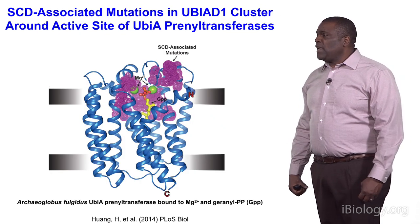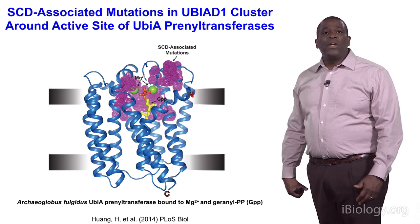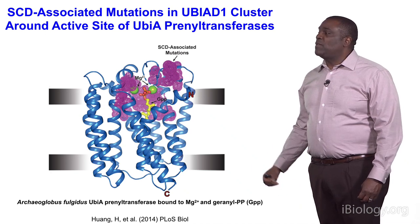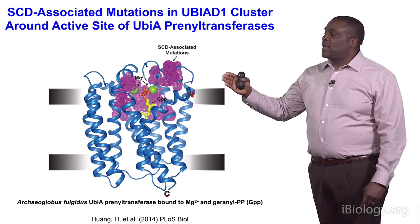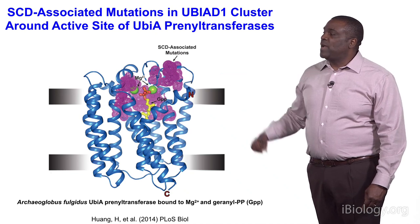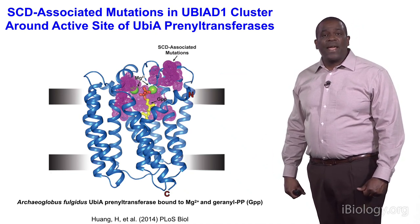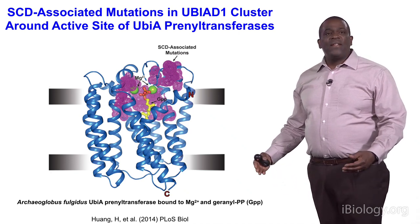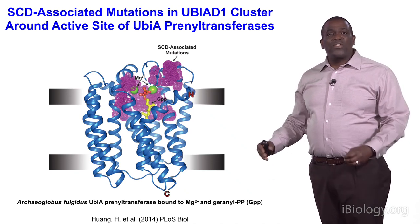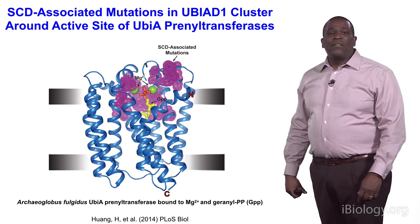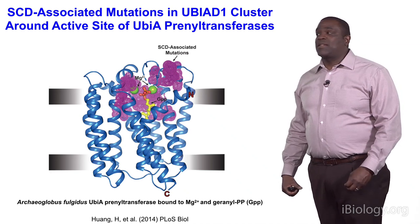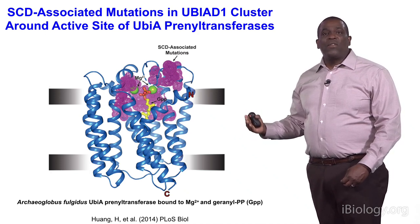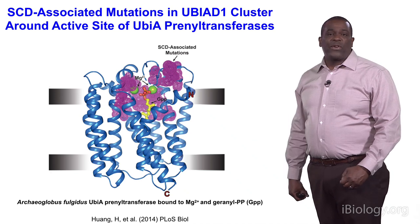Shown here is a crystal structure of a bacterial UBIA prenyltransferase, onto which we've mapped the amino acids corresponding to SCD-associated mutations in human UBIAD1. These studies reveal that all SCD-associated mutations cluster around the active site of the UBIA prenyltransferase, indicating that these mutations may disrupt the enzyme's recognition of the isoprenyl substrate.